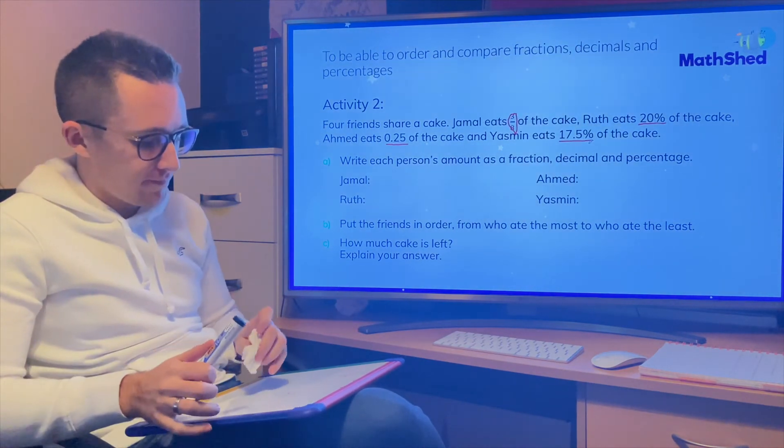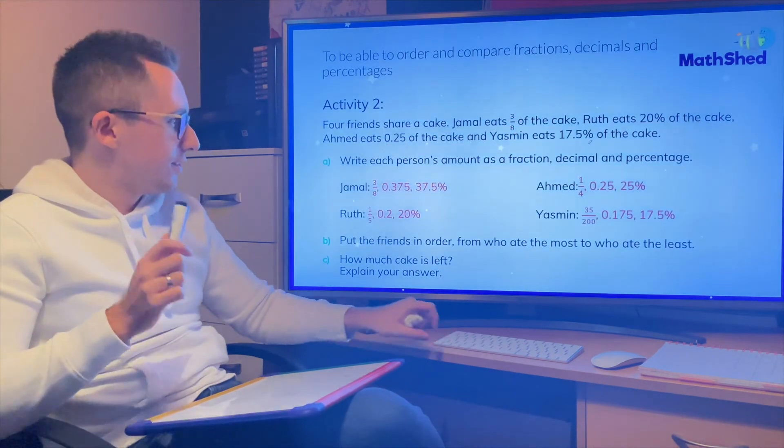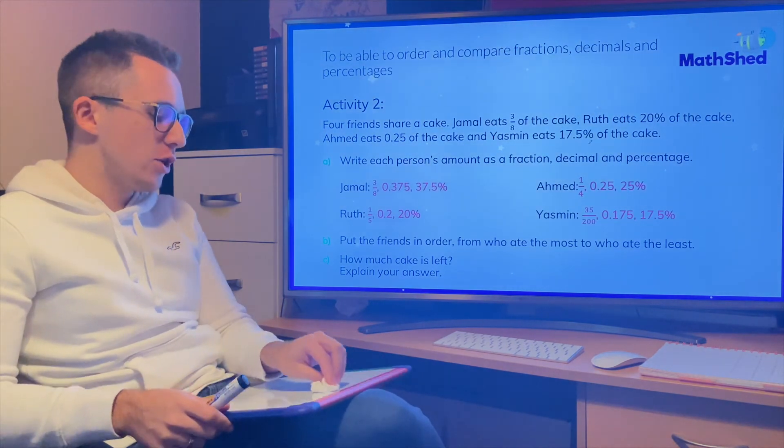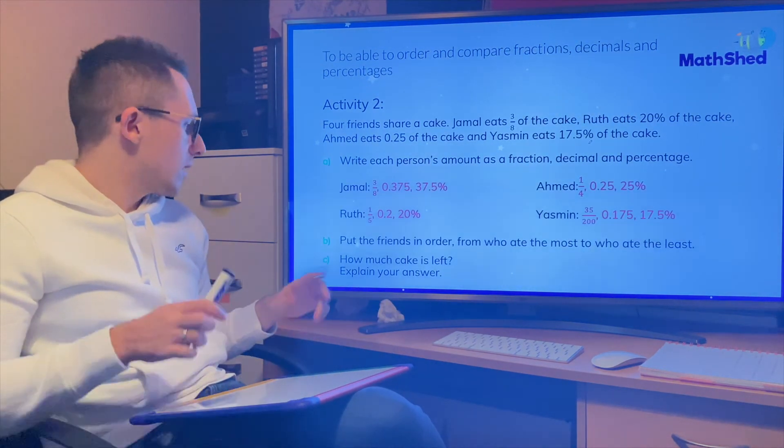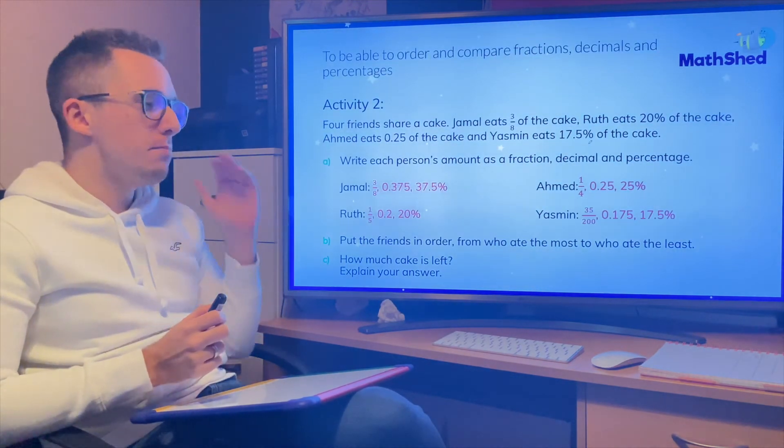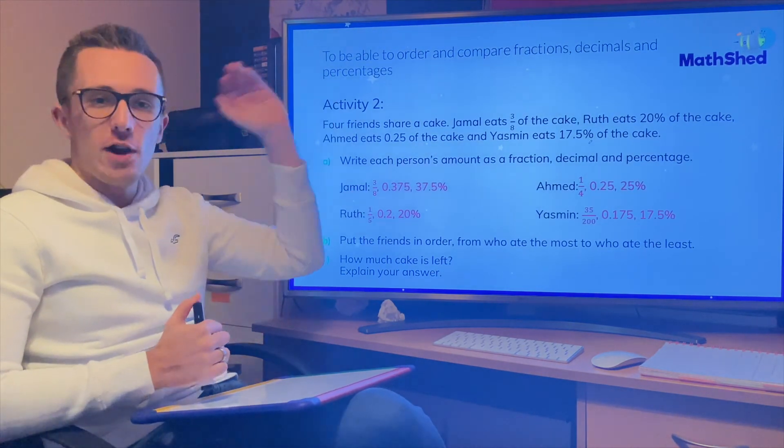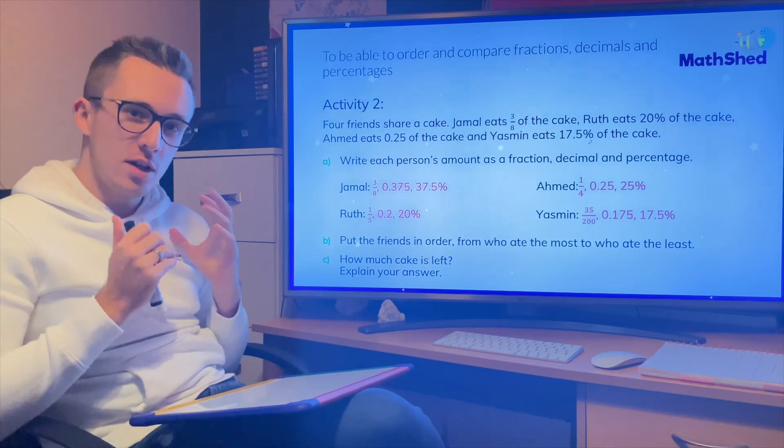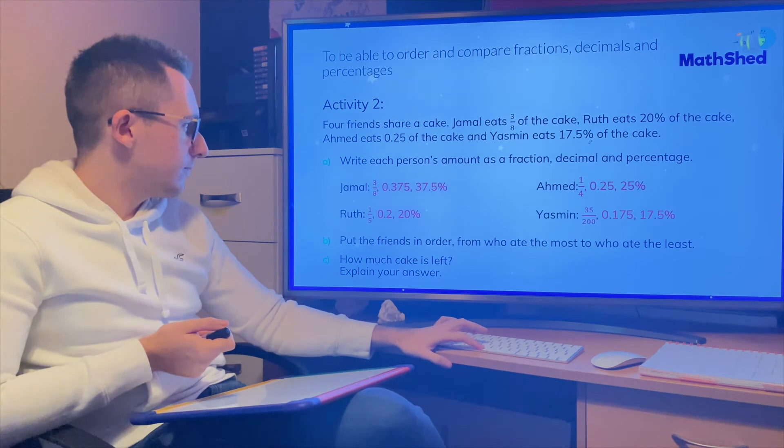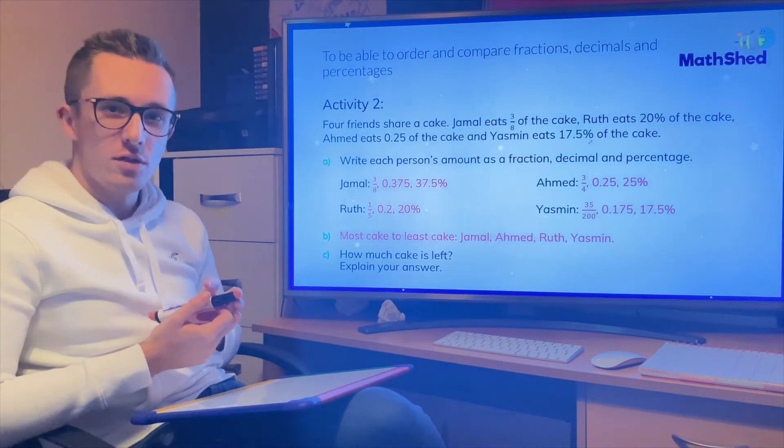Okay. I'm hoping this will do one part at a time. It did. Lovely. Now, those are the answers for part A. Have a look, see how you got on. So part B is to put the friends in order who ate the most to who ate the least. So you're going to look at these and order them from whoever ate the most cake to whoever ate the least cake. Have a go at that now. Okay, so Jamal, then Ahmed, then Ruth, then Yasmin.